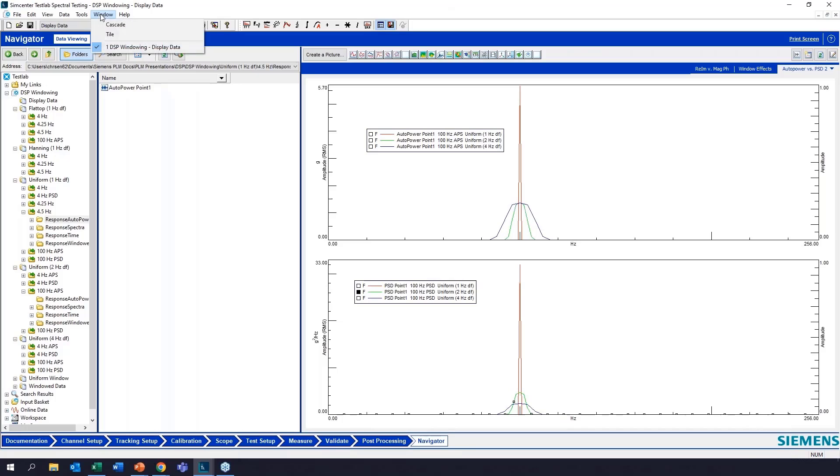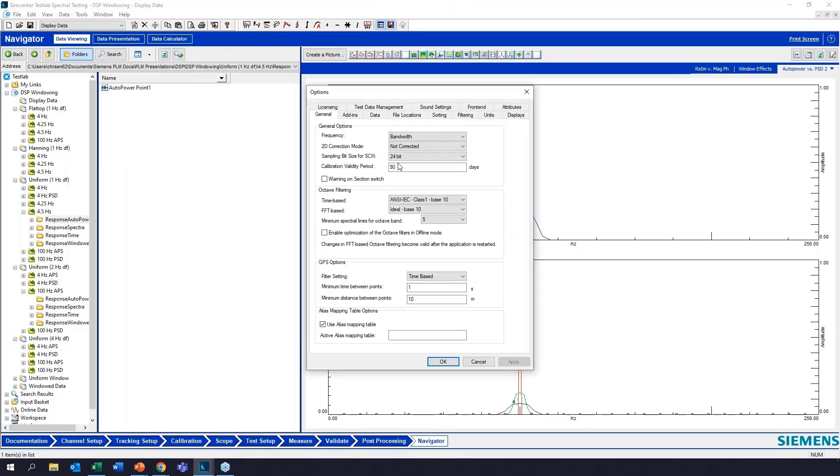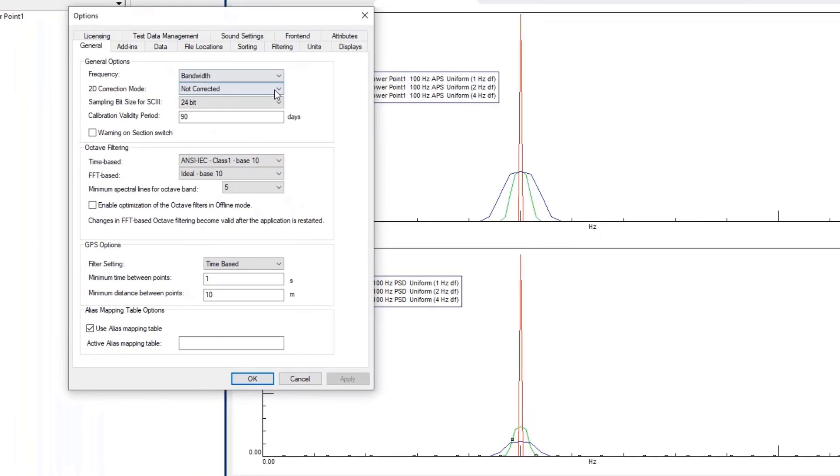If you go into options, you can see here that we can correct for amplitude or we can correct for energy, but not both.